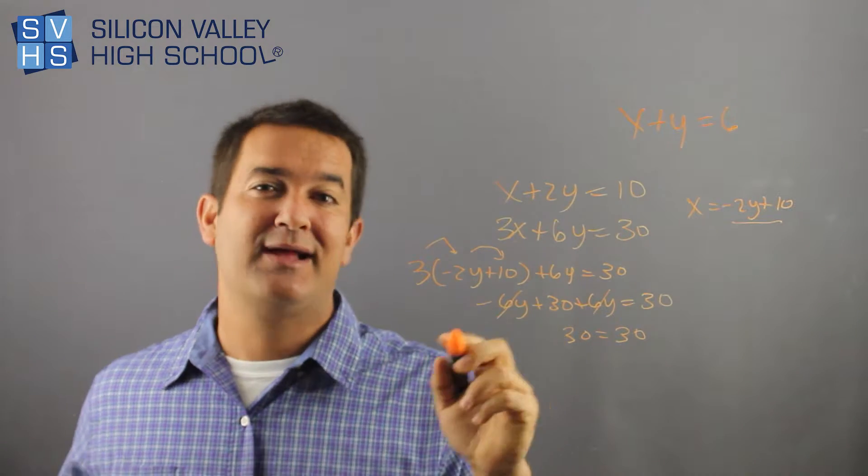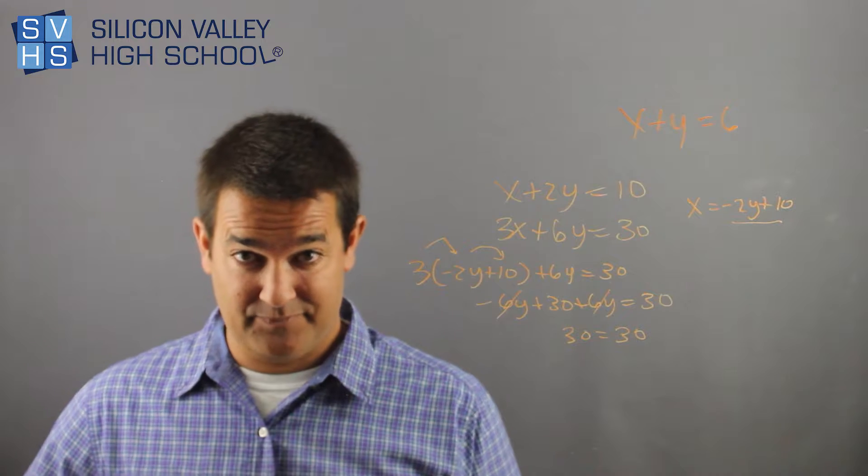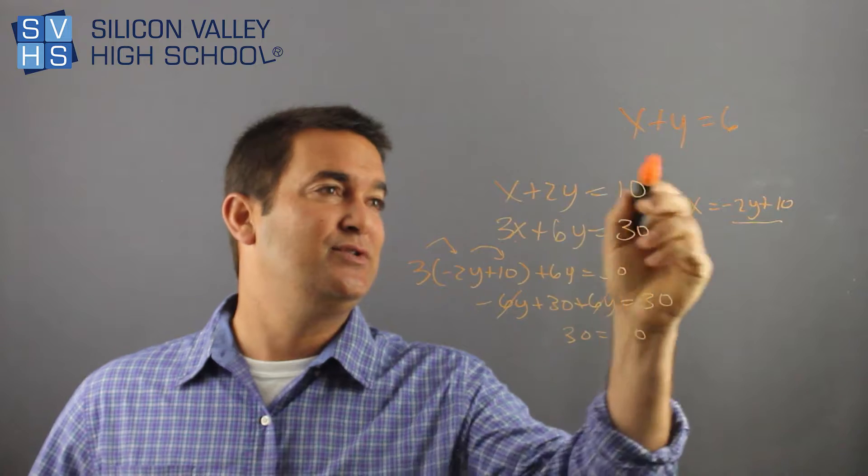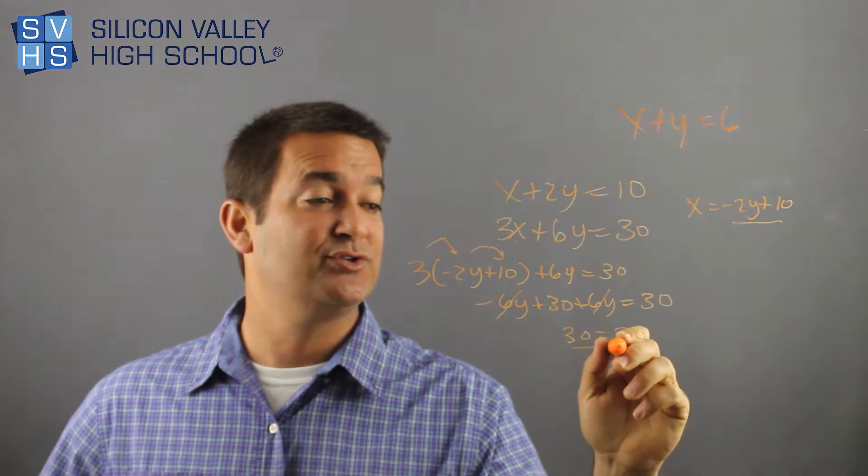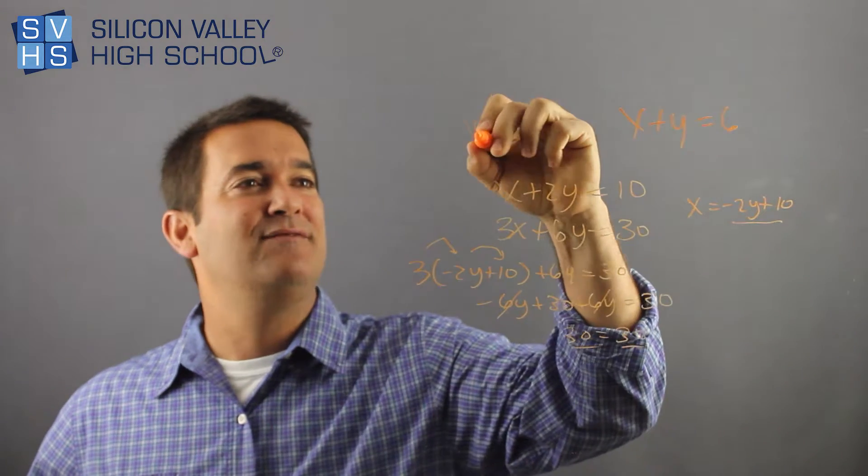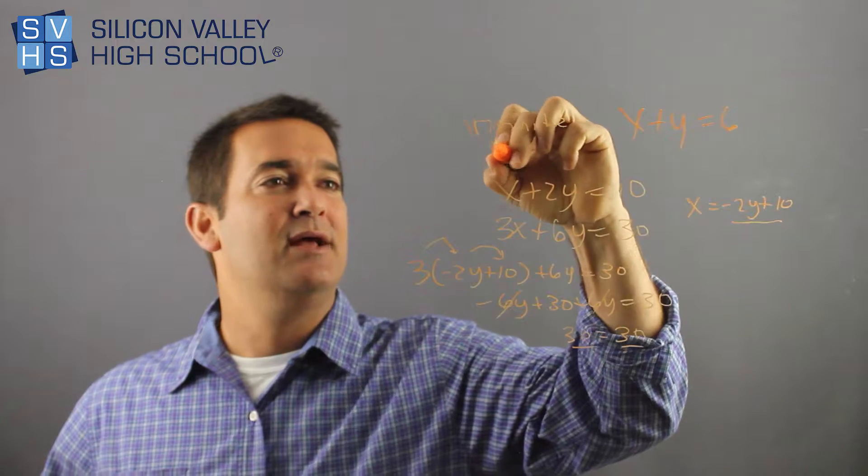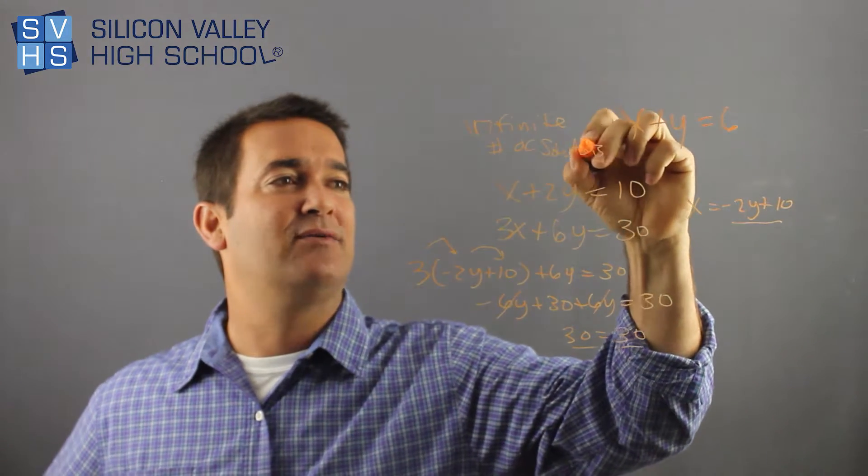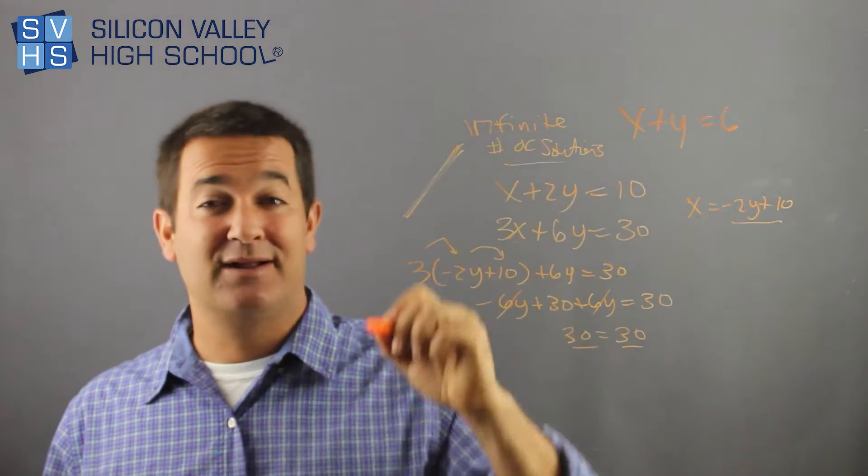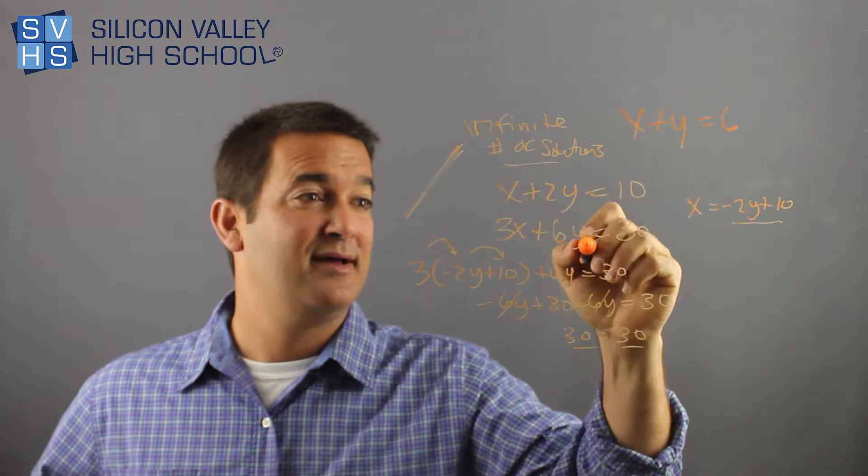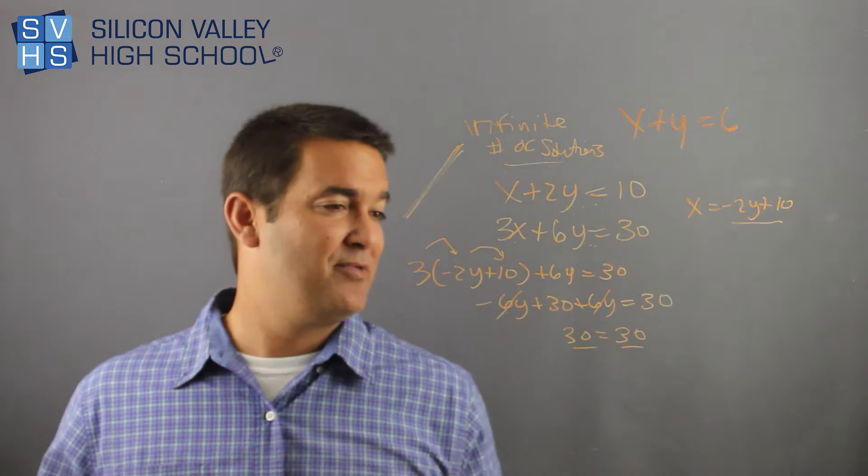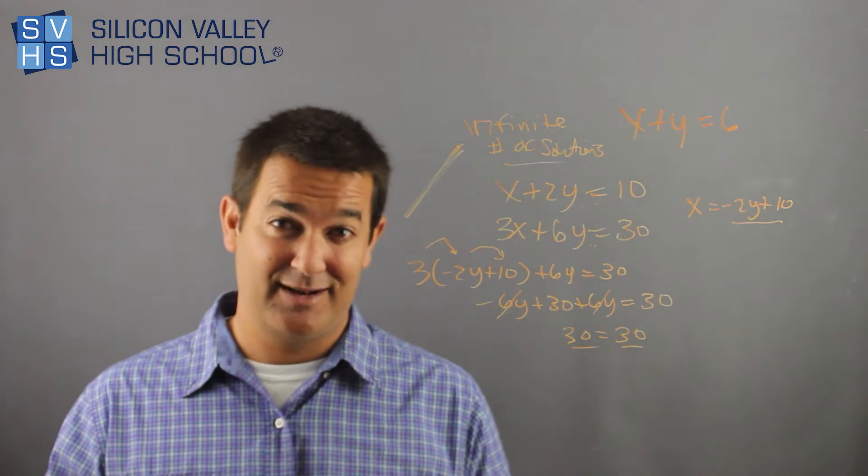Whenever you algebraically do this and it comes out to a true statement, does 30 equal 30? That's true. So whenever you do this whole drama, substitution method, and you come out to a true statement, 30 equals 30, 5 equals 5, 1 equals 1, the answer is infinite number of solutions. Because what that actually is, it's kind of hard to tell algebraically looking at it, but actually, that's a line and another line that are identical graphed over each other. These are the same line. And if you don't want to get it conceptually, just remember that Ryan said if it comes out to a true statement, the answer is infinite number of solutions.